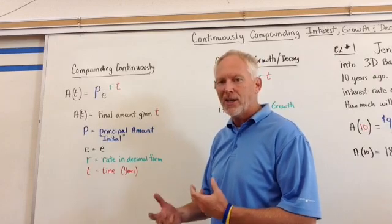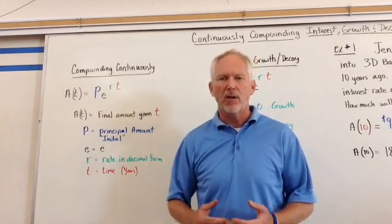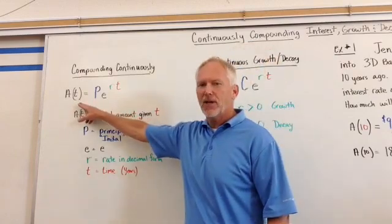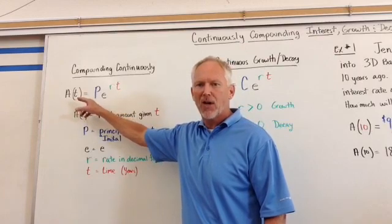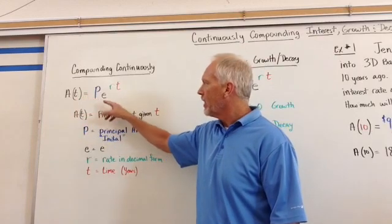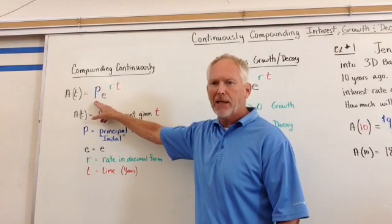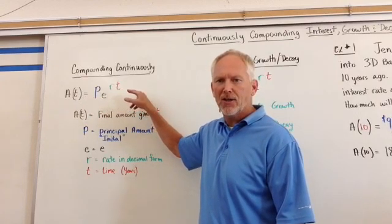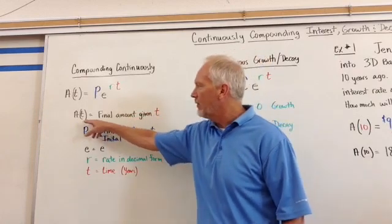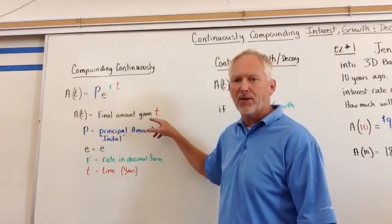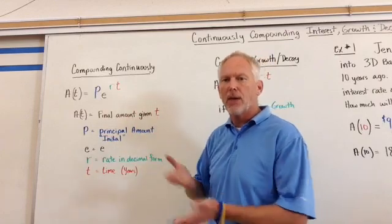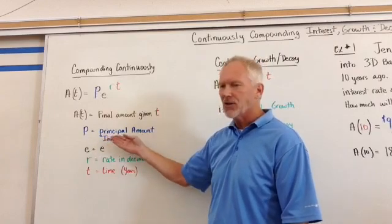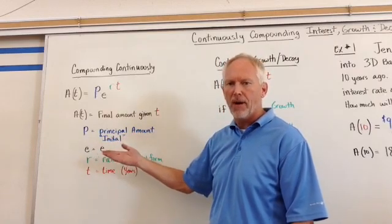For your own knowledge about where e came from and why we use it. We've got A(t), some amount after some time, some final amount is equal to P times e, and then as an exponent r times t. What do each of these mean? A(t) is the final amount given t, or after so much time you're going to have so much invested or so much money as a result. P is the principal or the initial or original amount.